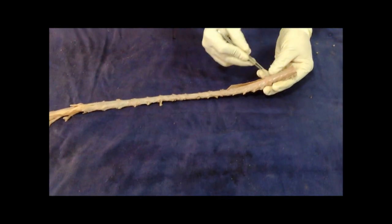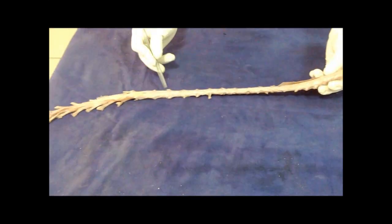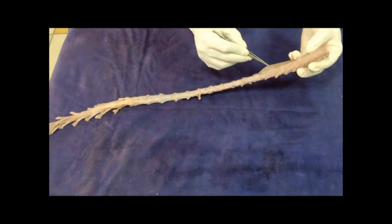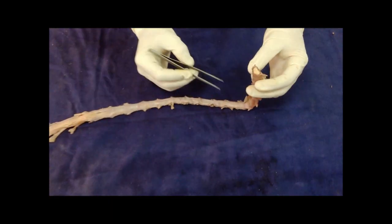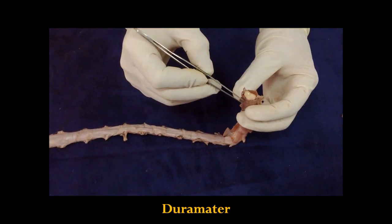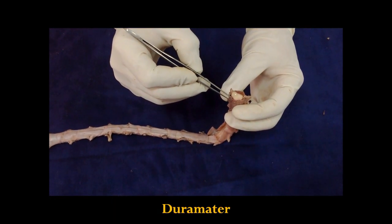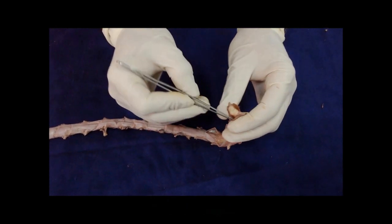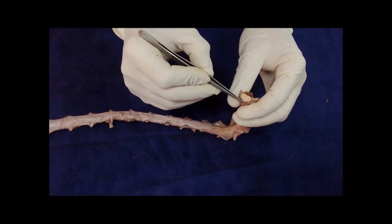This is the spinal cord with its meninges. The outermost covering is the dura mater. This is the dura and next we have a very thin membrane, the arachnoid mater.